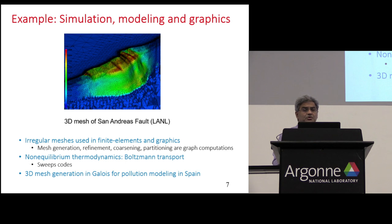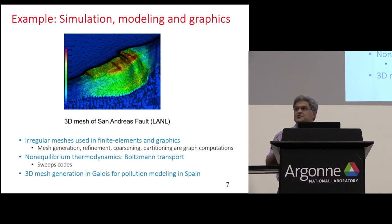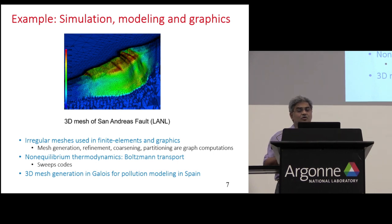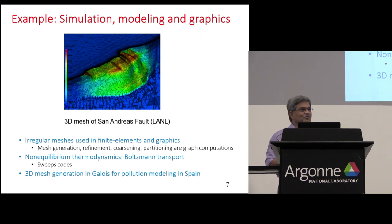The final example is in simulation, modeling, graphics, and so on — classical HPC stuff. If you're doing finite elements, you work with irregular meshes, and you have to generate, refine, coarsen, and partition those meshes. It turns out these can all be looked at as graph computations. We're currently involved in a mesh generation project with scientists who are experts in modeling pollution in Spain — they happen to be from the Canary Islands. When they contacted me and said they'd like to collaborate, I said yes — and it turned out to be a good collaboration.